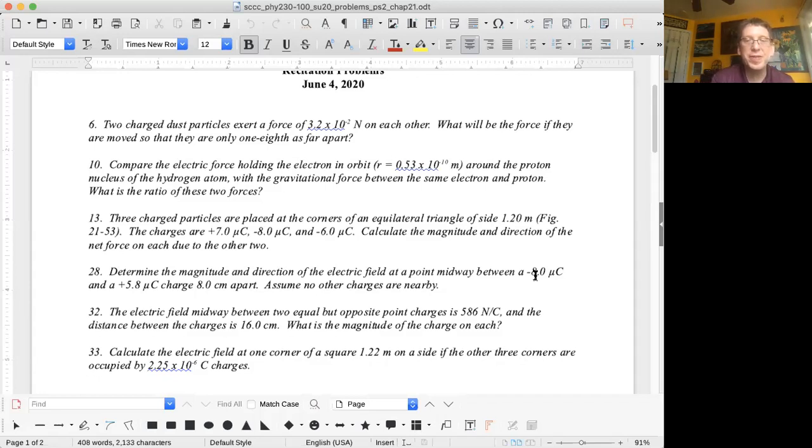Number 32, the electric field midway between two equal but opposite point charges is 586 newtons per coulomb, and the distance between the charges is 16.0 centimeters. What is the magnitude of the charge on each? So you have equal and opposite point charges at a point midway between. Do you think the magnitudes are going to add together or cancel each other out?